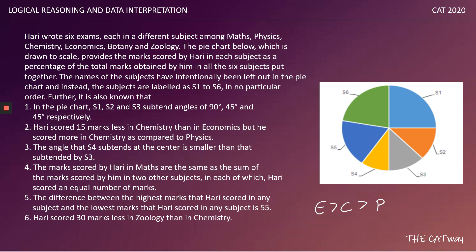The fourth condition states: the marks scored by Harri in maths are the same as the sum of marks scored in two other subjects in which he scored equal marks. Connecting this to the first point — S1 is 90° and equals S2 + S3 where S2 = S3 = 45°. So maths must be S1, but we cannot yet say anything definitive about S2 and S3.